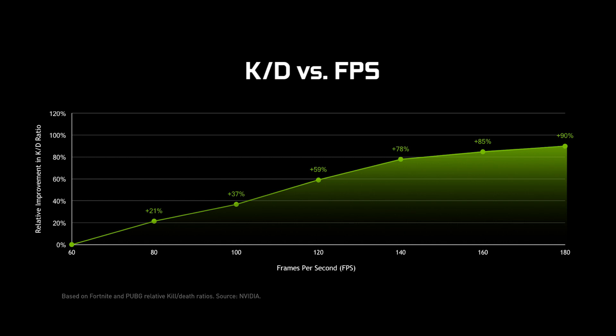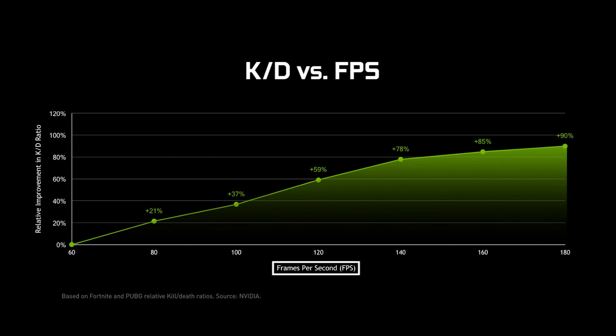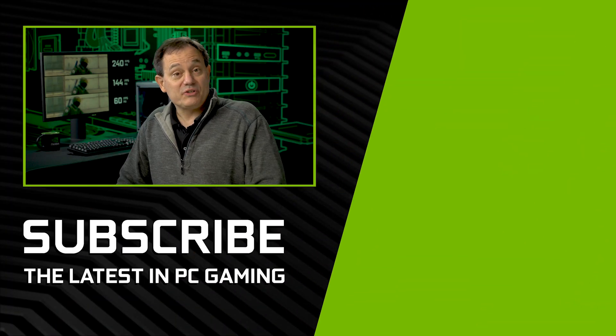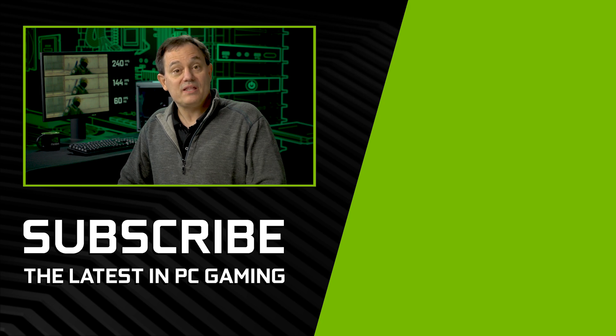So why is this important? Why does high frame rate matter? We have a chart that plots the correlation between high frame rate and success in a first-person shooter — specifically, kill/death ratios in battle royale games like Fortnite and PUBG. As you can see, there's a correlation between higher frame rates and higher kill/death ratios. If you're interested in the study, please check out the link below. We hope you found our video on high frame rate gaming informative — please leave your thoughts in the comments and check out our slow-mo high frame rate video. Thanks for watching.